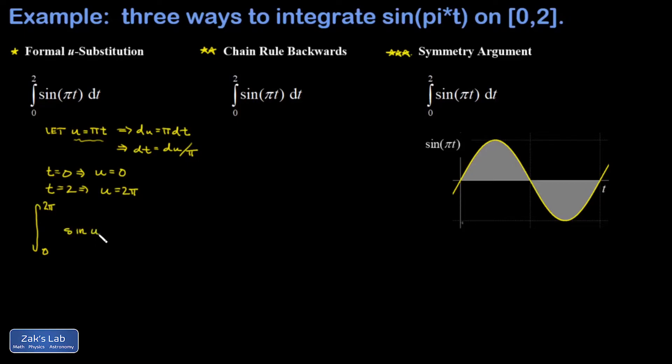This transforms to the integral from zero to two pi. Sine of pi t is now the sine of u, and then dt is du over pi, so I'll write the one over pi out in front. Now I just have to guess the antiderivative of the sine function, and that's the negative of the cosine function.